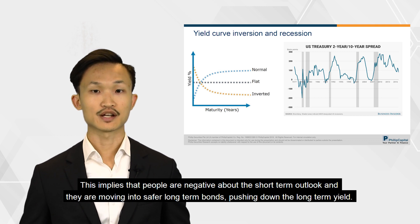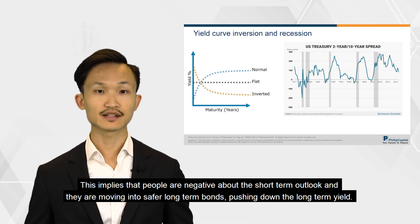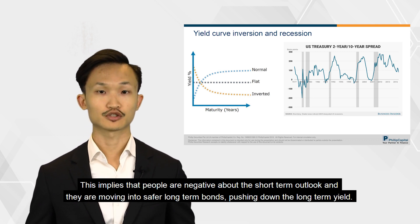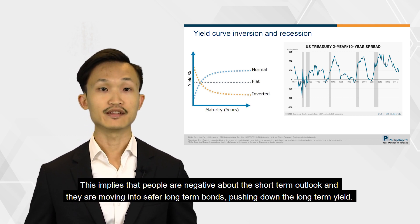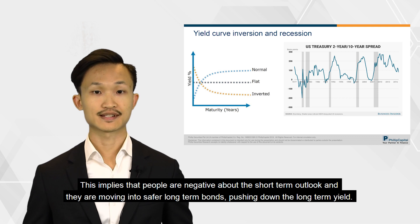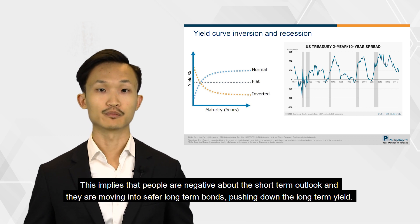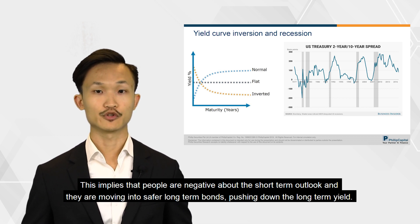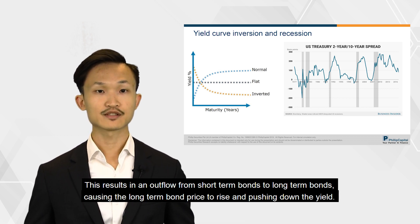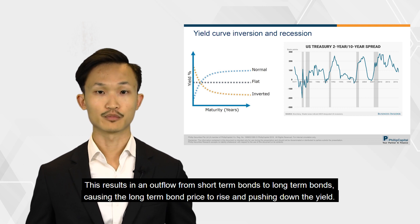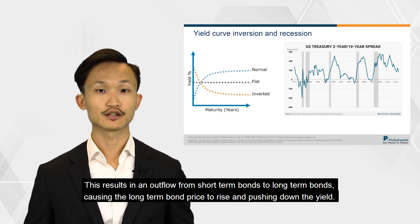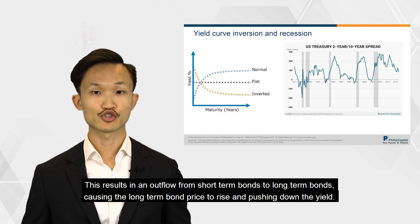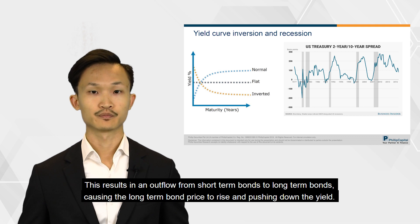This implies that people are negative about the short-term outlook and they are moving into safer long-term bonds, pushing down the long-term yield. This results in an outflow from short-term bonds to long-term bonds, causing the long-term bond price to rise and pushing down the yield.